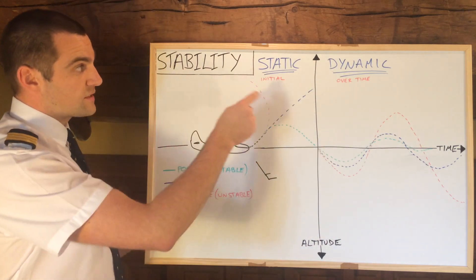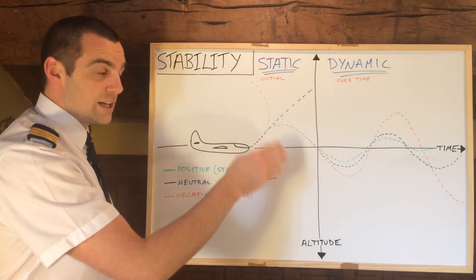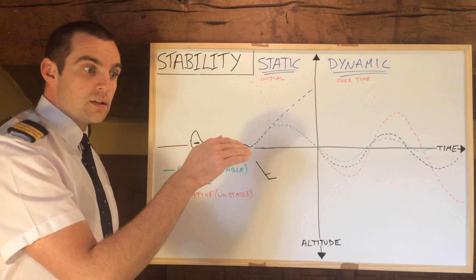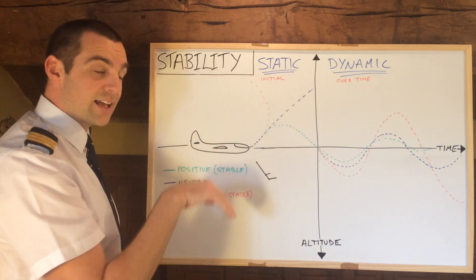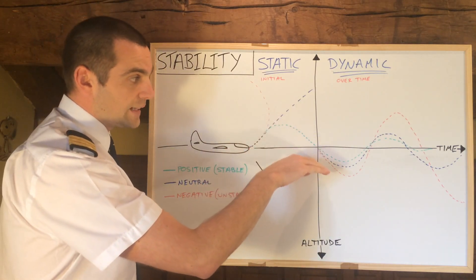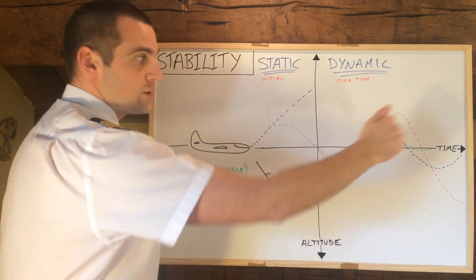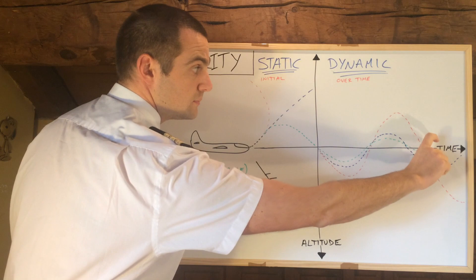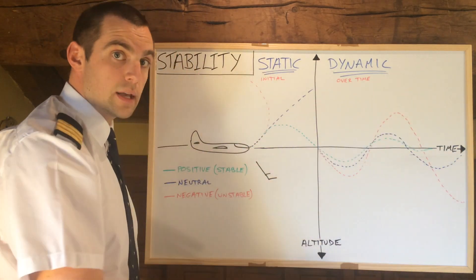If it had positive static stability and neutral dynamic stability, the oscillations would stay the same — there's no inherent tendency to correct itself over time. However, the initial tendency to counteract the disturbance is still there. So initially it would pitch down, then pitch back up, pitch back down, pitch back up, and just continue like this with the same oscillation — not getting any worse, but not getting any better.